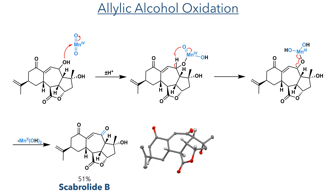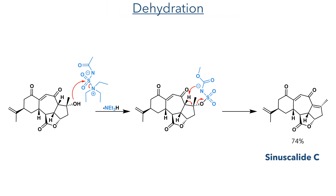Its structure was conclusively proven using X-ray crystallography. To transform this molecule into Synesculide C, they carried out a dehydration reaction using the Burgess reagent. This molecule is zwitterionic and is attacked by the hydroxyl group, eliminating triethylamine. This triggers the elimination of the oxygen group, forming the desired double bond in a 74% yield.